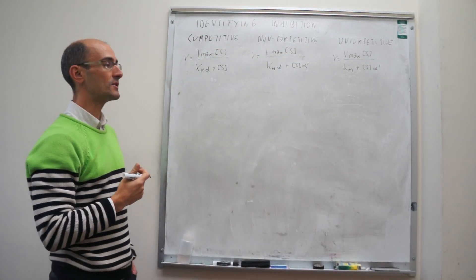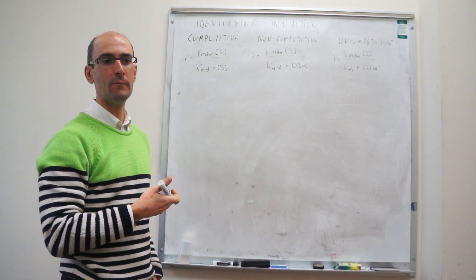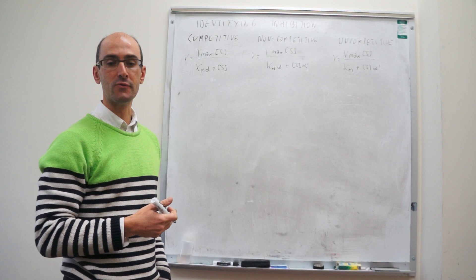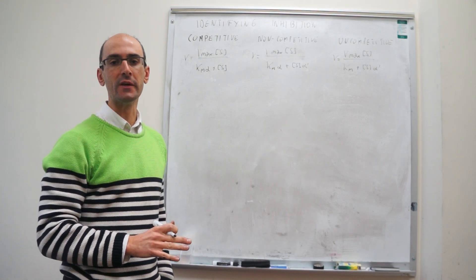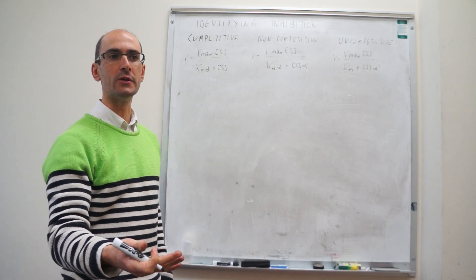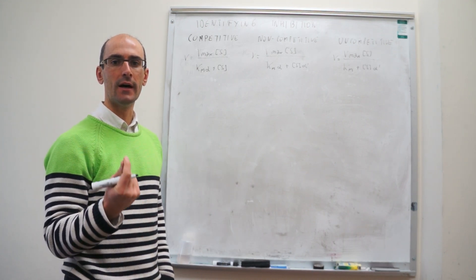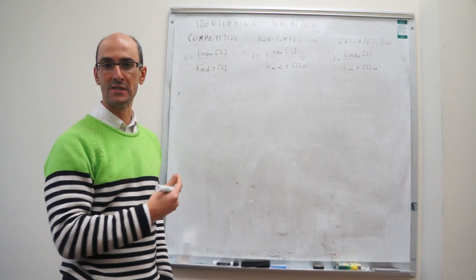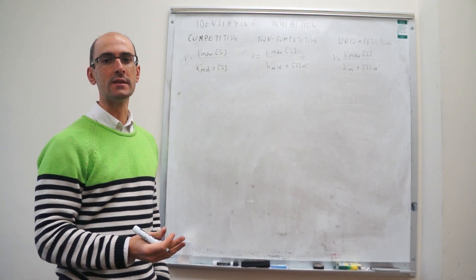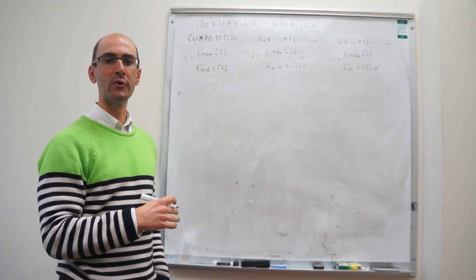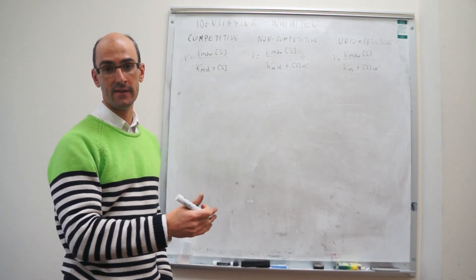So the question is: we're going to do experiments in which we first measure the rate as a function of concentration of substrate for the uninhibited reaction — in the presence of no inhibitor — and then we add inhibitor and measure the rate. The question is, how can we tell apart whether that inhibitor corresponds to one of these three cases?